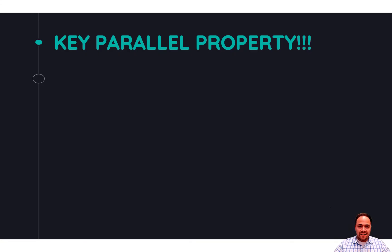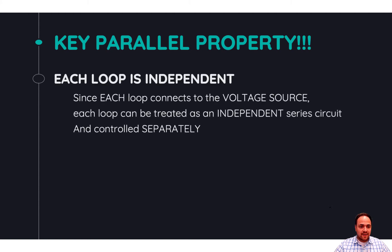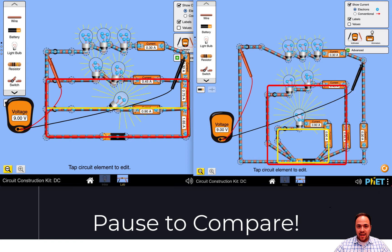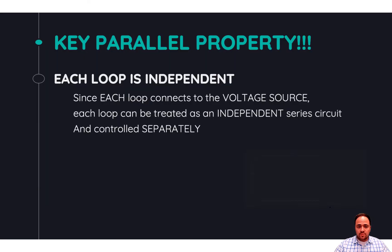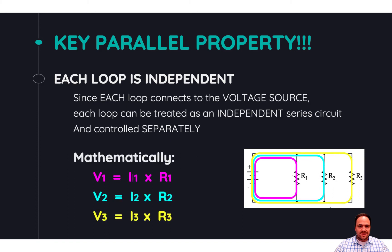The biggest thing about parallel circuits, besides the fact that it's multiple loops, is that each loop is independent. What we created was three independent parallel loops all wired into the same voltage source. If we put a side-by-side image of three individual loops and a parallel circuit with the same resistors, it's essentially the same circuit — when you make it in parallel you can just share some of the wires. Since the loops are independent, we can use Ohm's law separately on each individual loop as if they were regular series circuits.